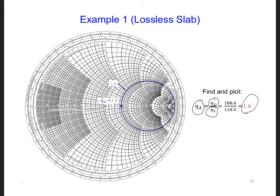So we find the circle for 1.6. And the imaginary part is 0, so we're going to be right along the horizontal axis. And we're going to label this as eta A.